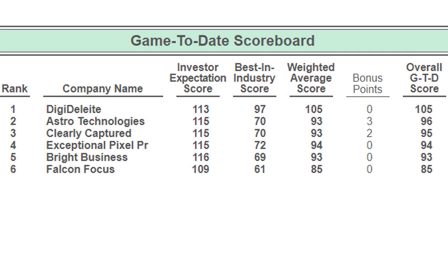Now let's look at the game-to-date scoreboard. Company D is at 105, Company A at 96 with three bonus points, Company C at 95, Company E at 94, Company B at 93, and Company F at 85. It's only a 20-point spread between top and bottom — everyone is still in this race.